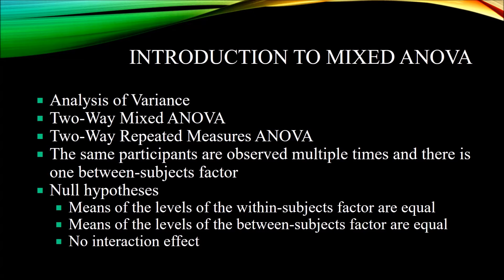For a two-way mixed ANOVA, you're going to have three null hypotheses. The first null hypothesis states that the means of the levels of the within-subjects factor are equal — so the means of the pretest, the post-test right after the treatment, and the post-test six months later would be equal. The second null hypothesis is that the means of the levels of the between-subjects factor are equal — so the means between the male and female participants would be equal. The third null hypothesis is that you have no interaction effect — that's the interaction between the between-subjects factor and the within-subjects factor.